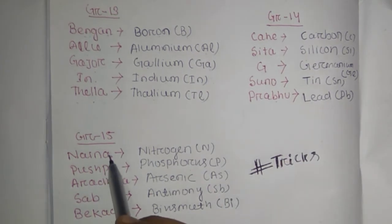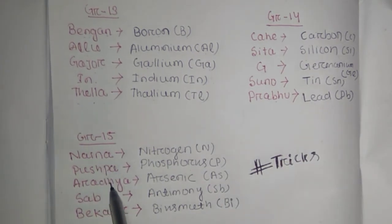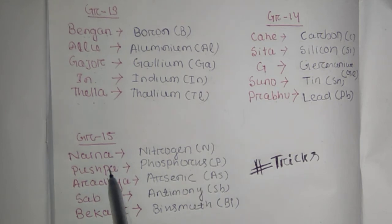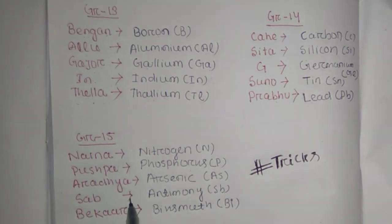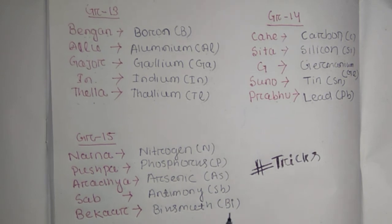Group number 15 trick is: Nena, Puspa, Aradhyya, Sub-Bekar. Nena for Nitrogen (N), Puspa for Phosphorus (P), Aradhyya for Arsenic (As), Sub (Sb) for Antimony, Bekar for Bismuth (Bi).